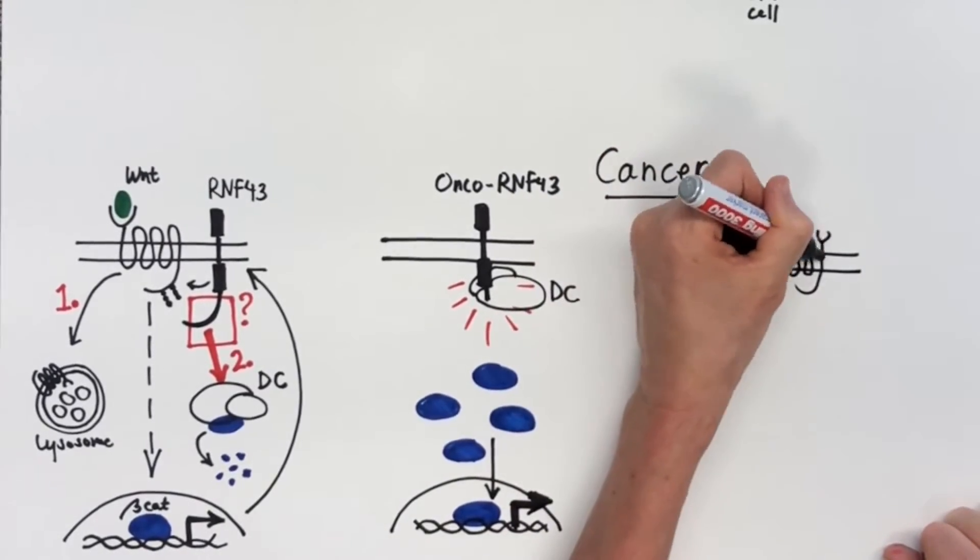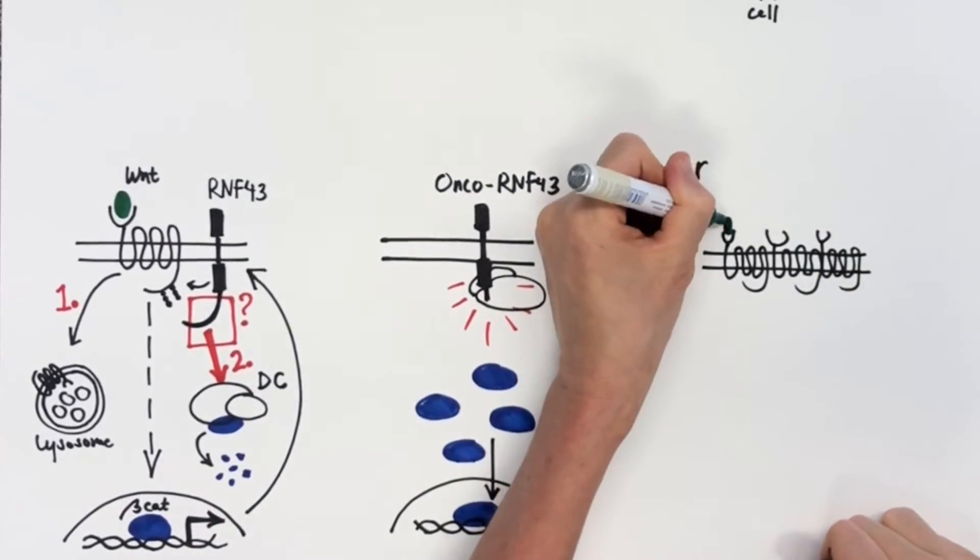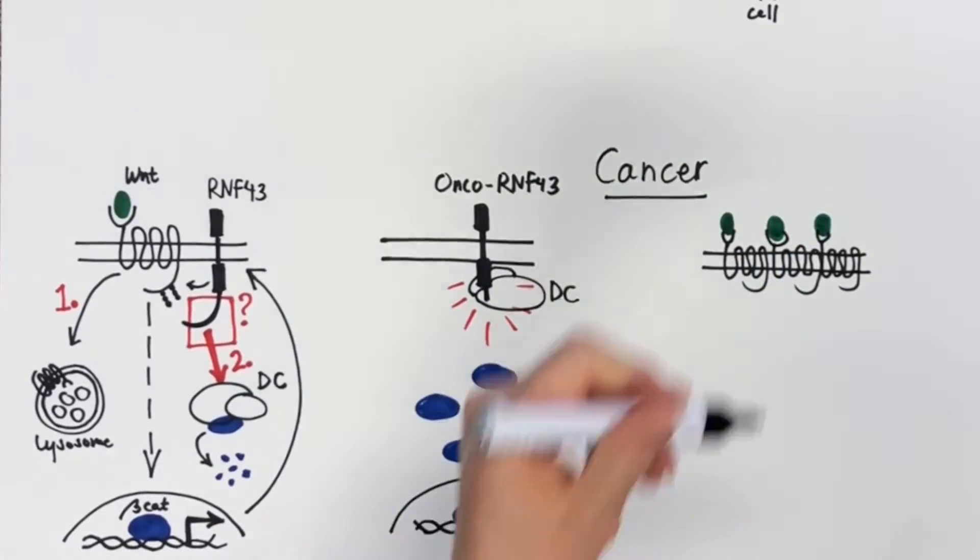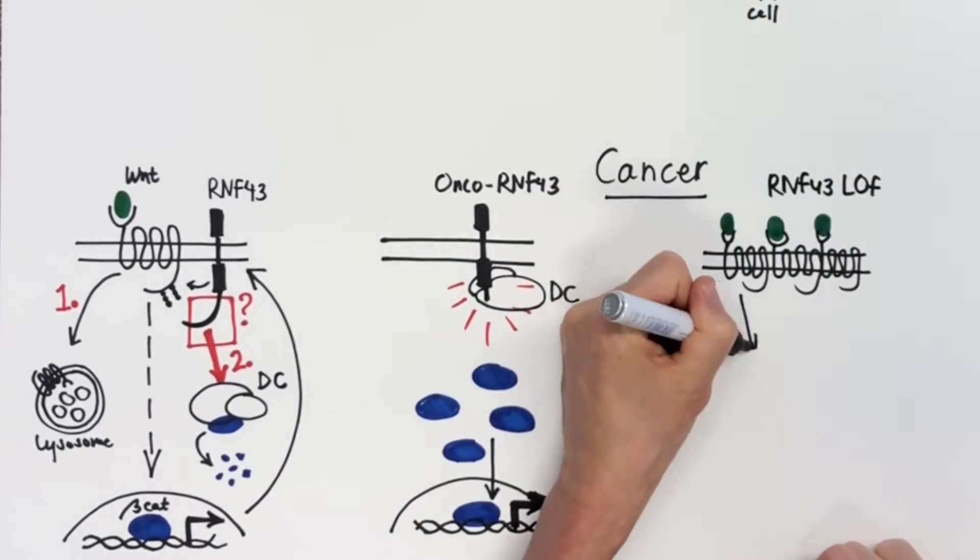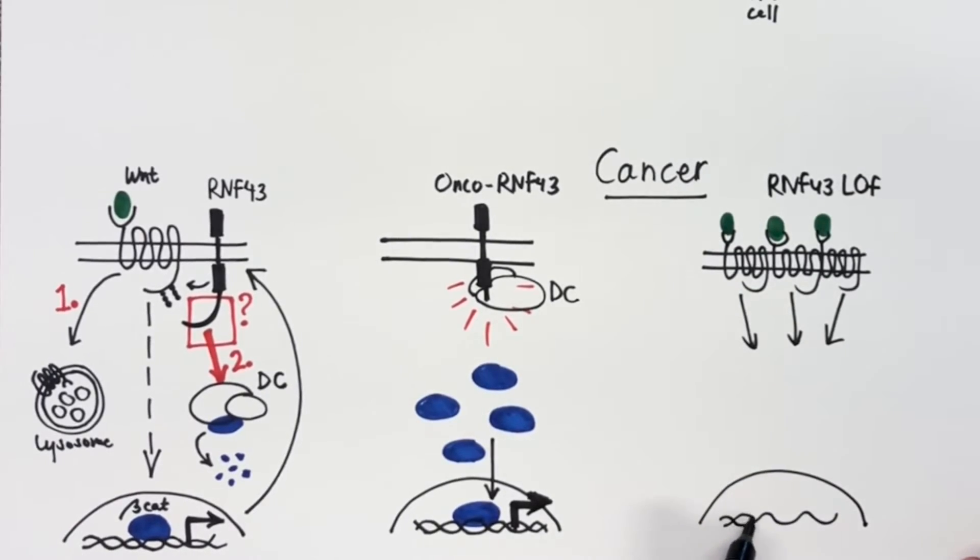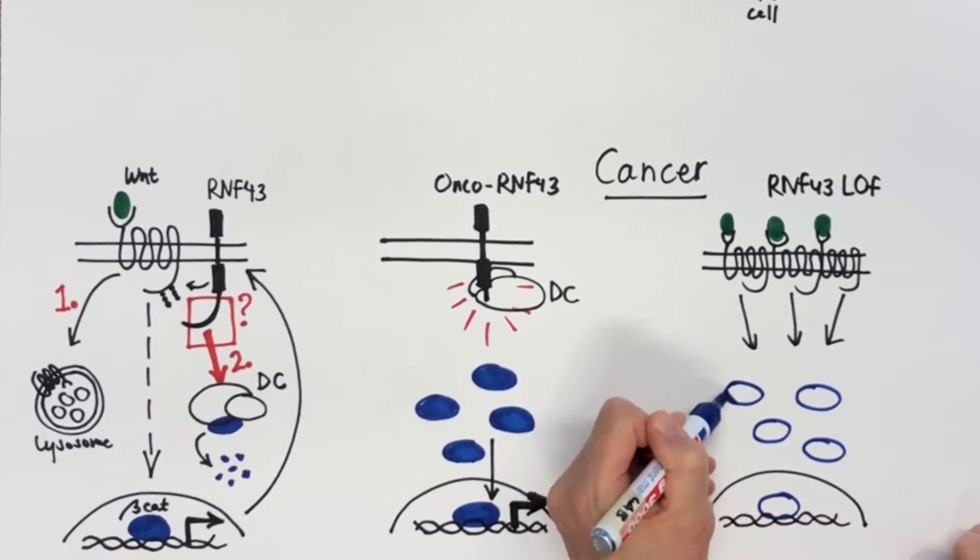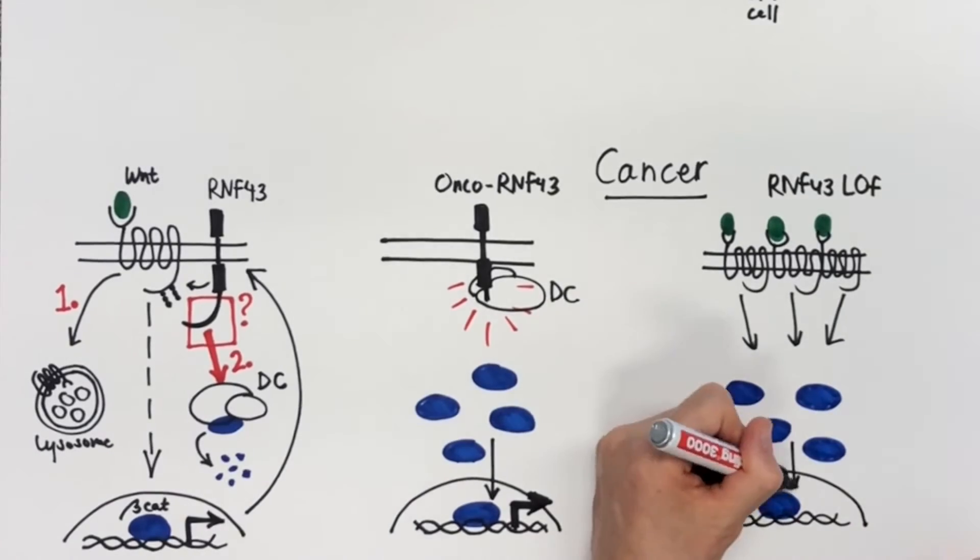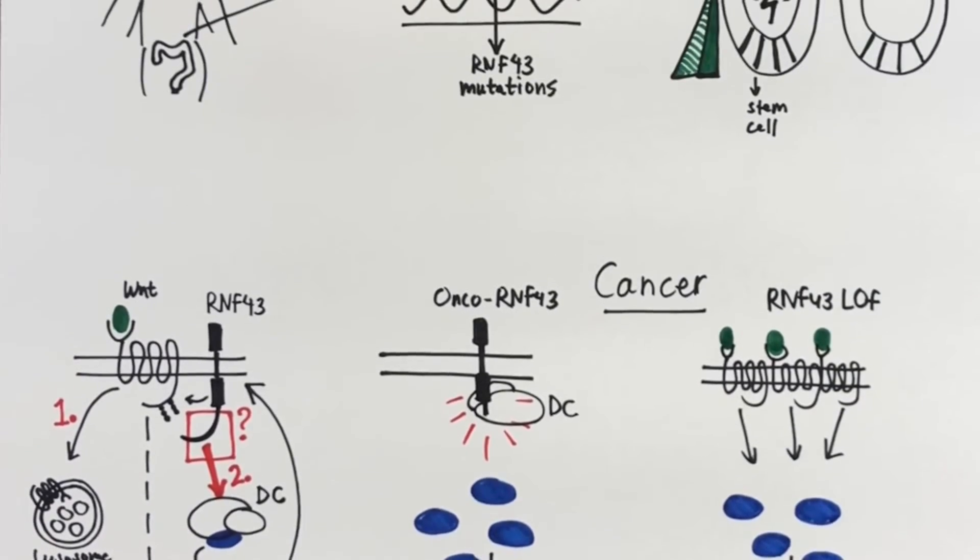This is in contrast to previously described loss-of-function mutations that mediate accumulation of Wnt receptors due to the absence of RNF43 activity. This causes a state of Wnt hypersensitivity and a Wnt ligand-dependent growth state of tumors.